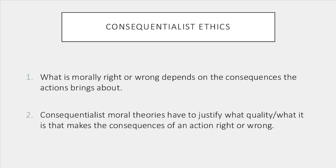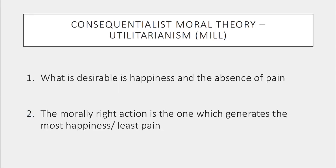The most famous type of consequentialist ethics is utilitarianism, which was first proposed by the philosopher Jeremy Bentham and then furthered by his student John Stuart Mill. Utilitarians say that what is desirable is happiness, and that the morally right action is the one that produces the greatest amounts of happiness, or conversely the least amount of pain — not the most happiness for the moral agent or the person making the decision, but the greatest amount of happiness overall.